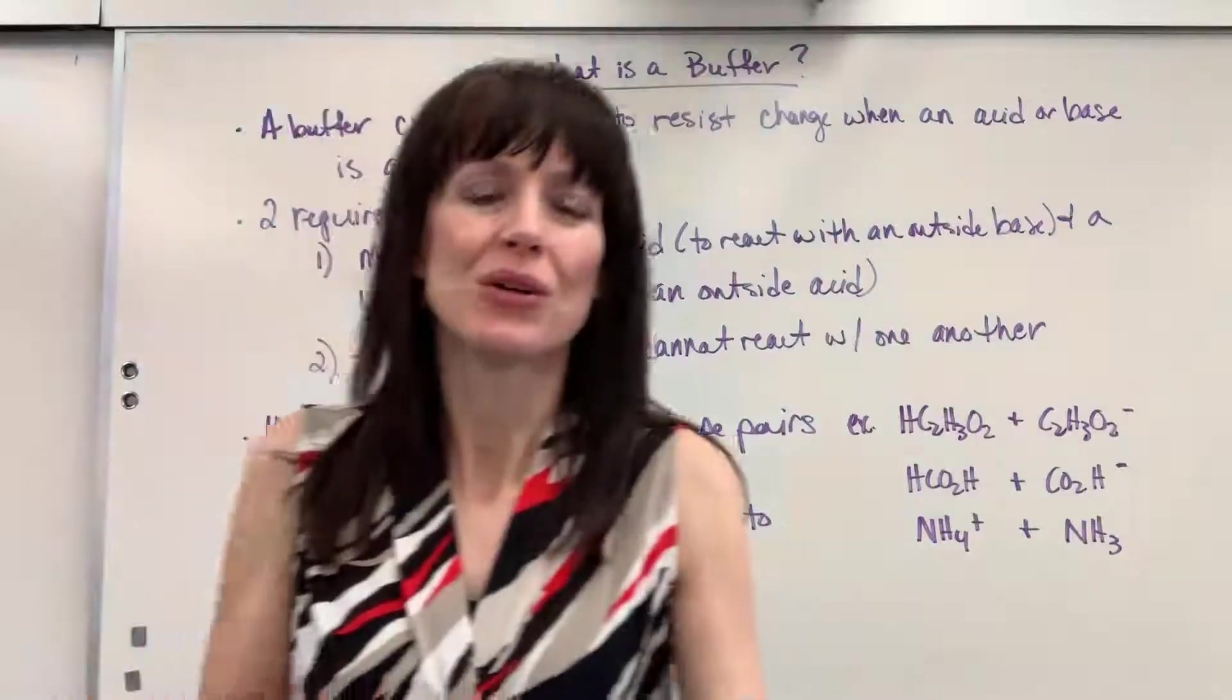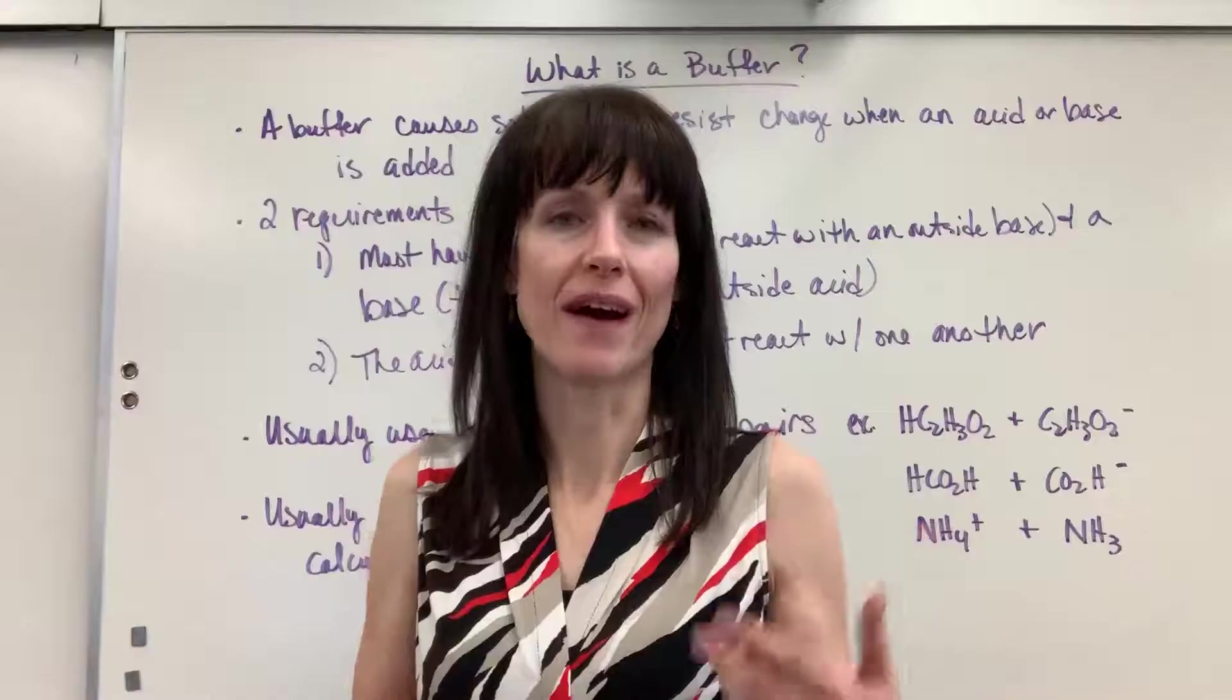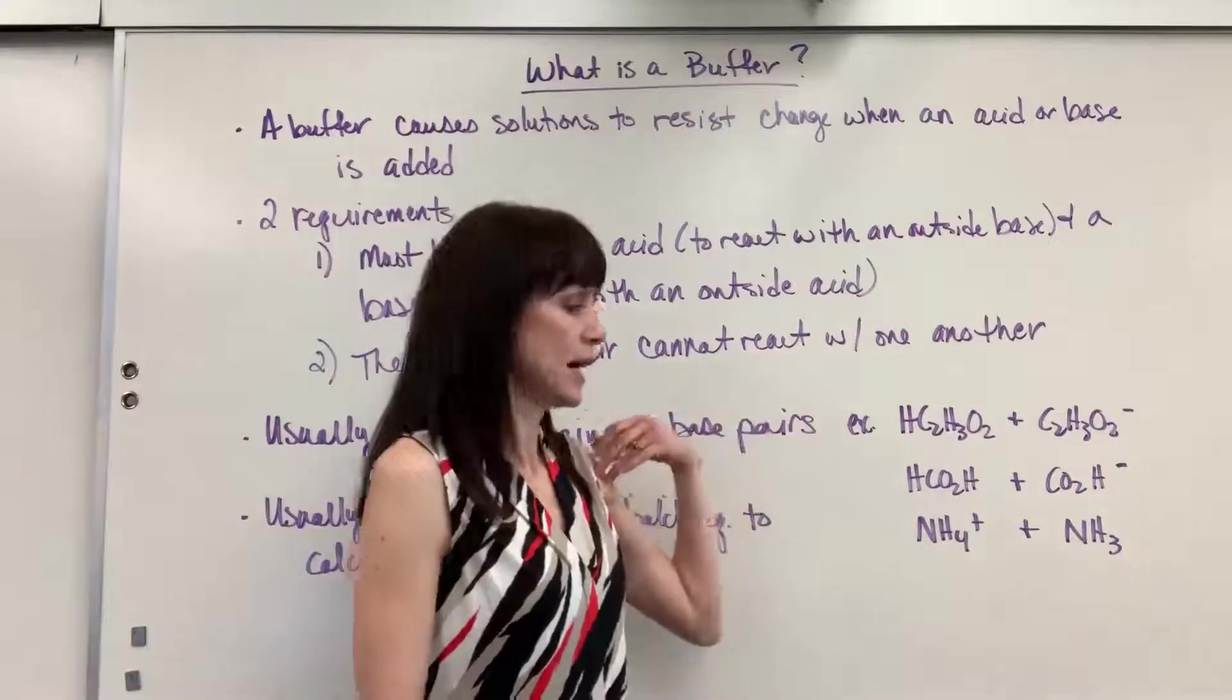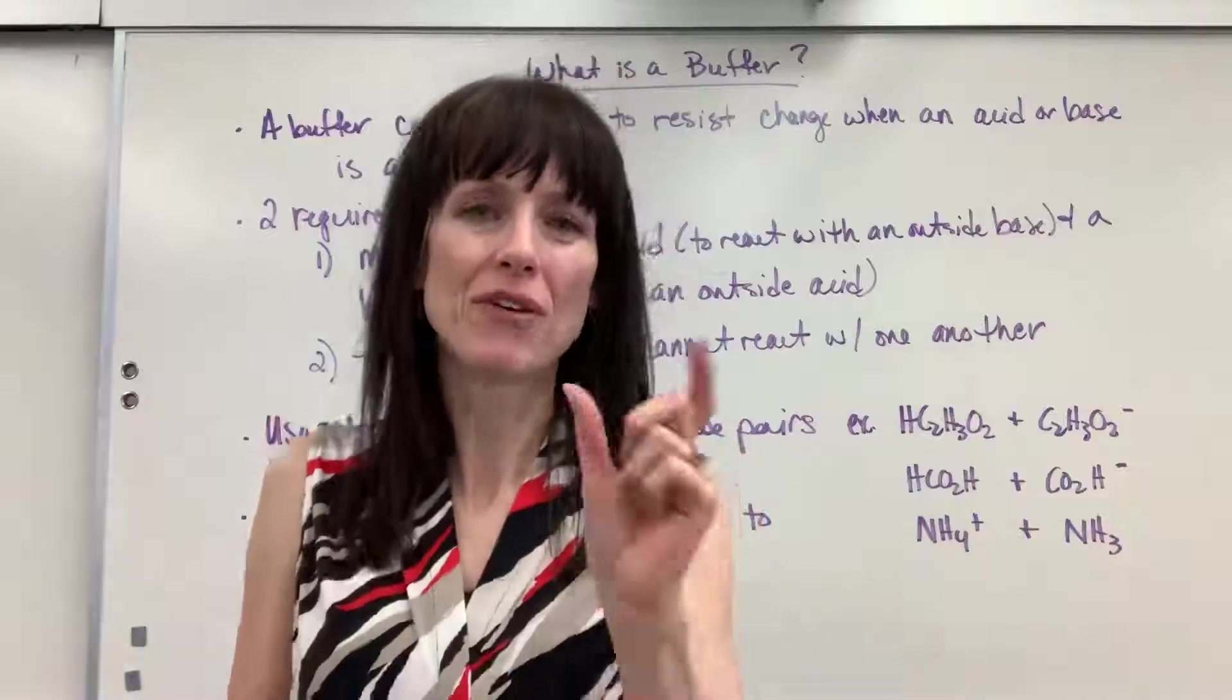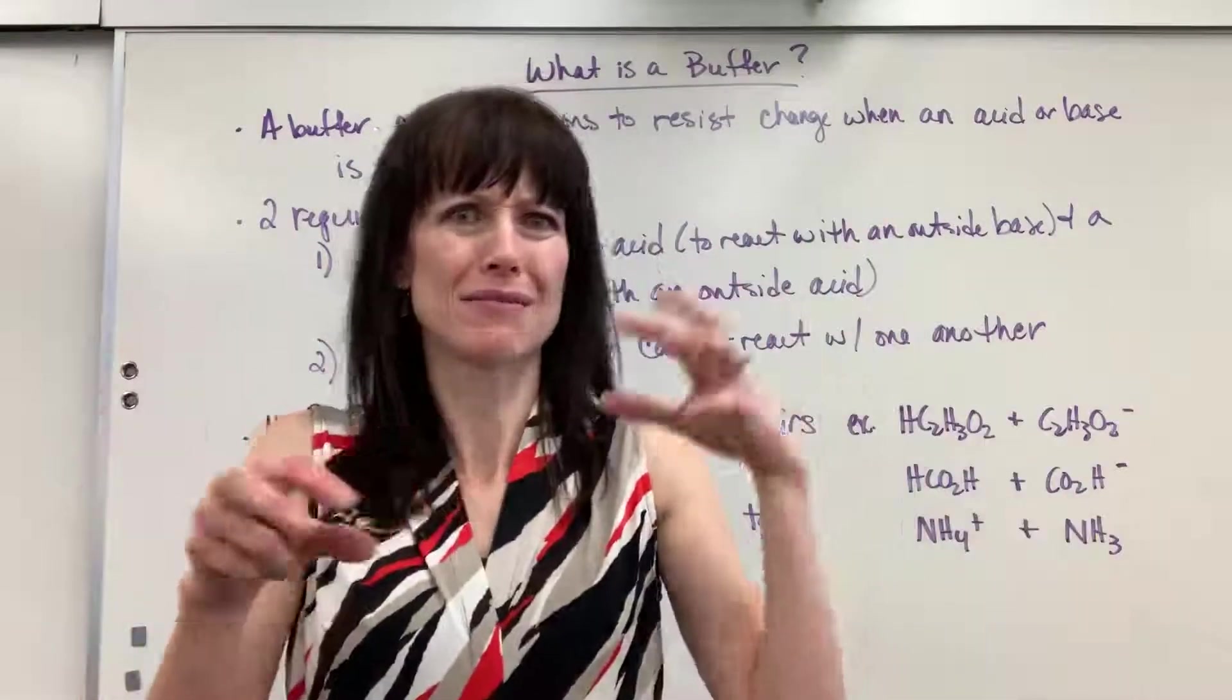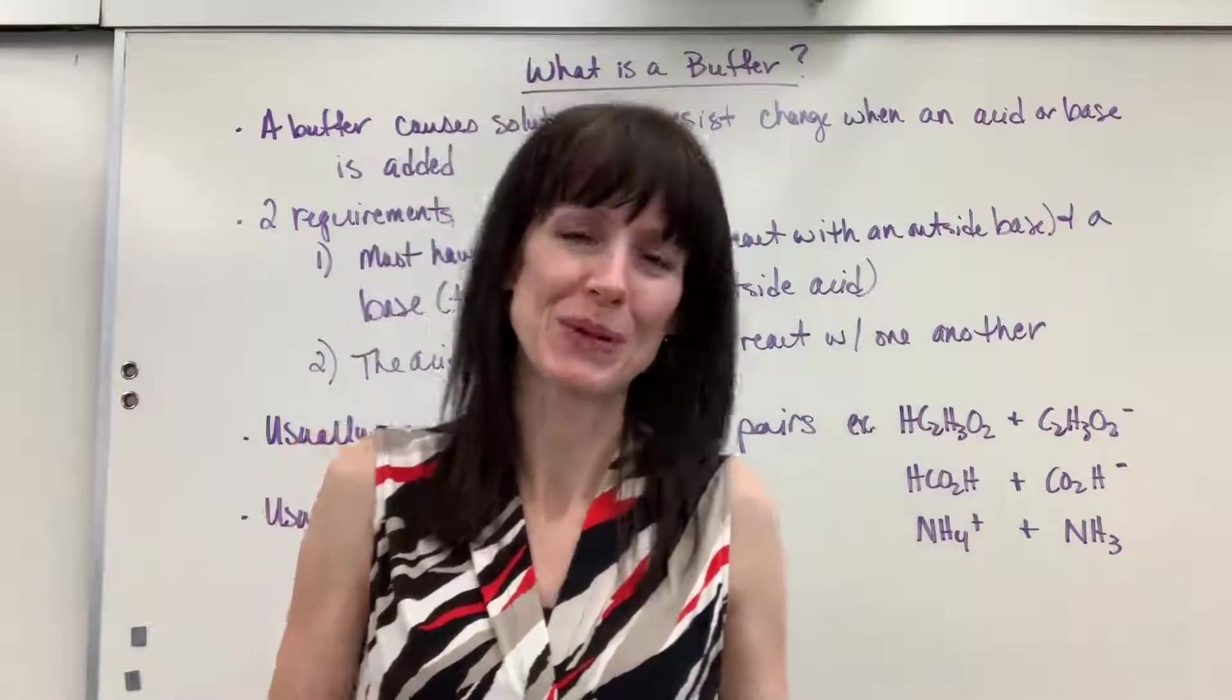Just for fun, look on the back of the next soda that you drink or the next orange juice that you buy and you will discover there's a buffer. You're going to see something like citric acid and citrate. Why are those both in there? It's a buffer. It's a buffer that we put in there to maintain the pH of that drink. So even if a little something different gets in there, it still tastes the same. It has the same pH. Pretty cool.